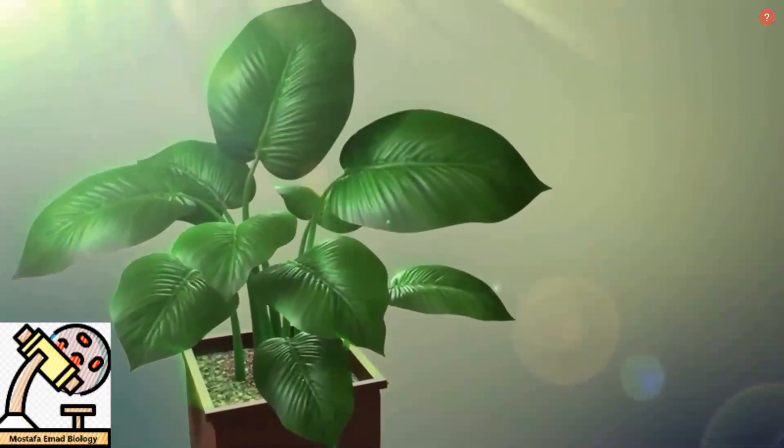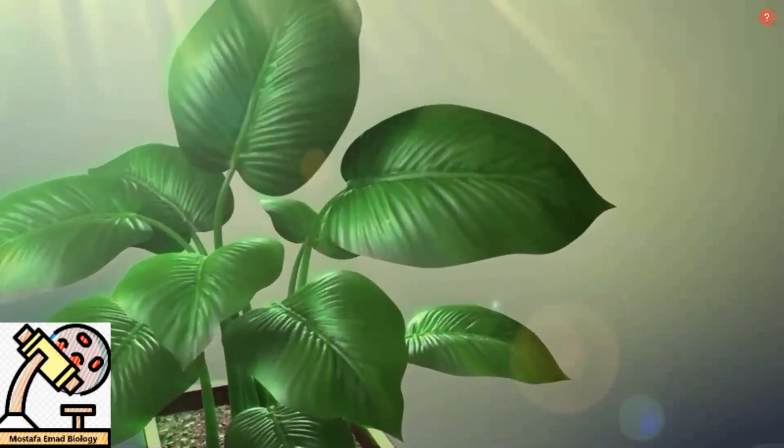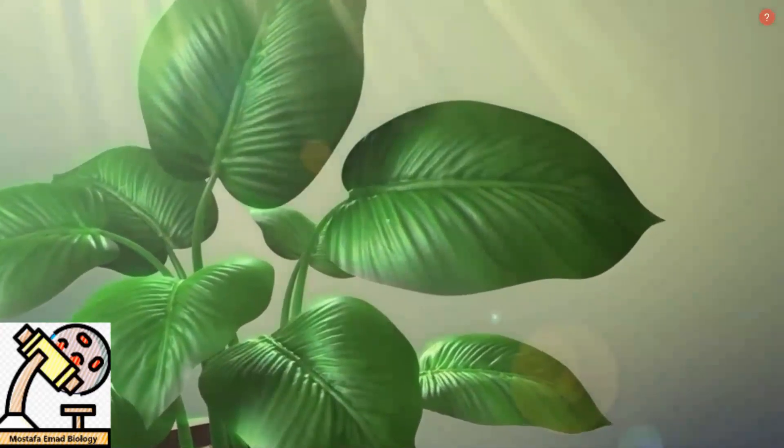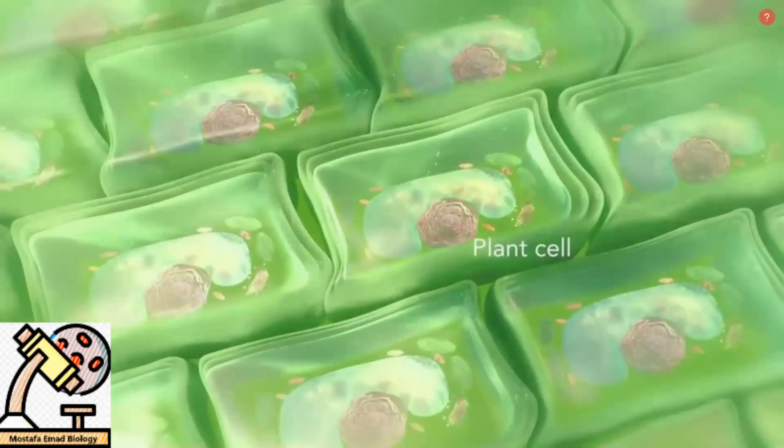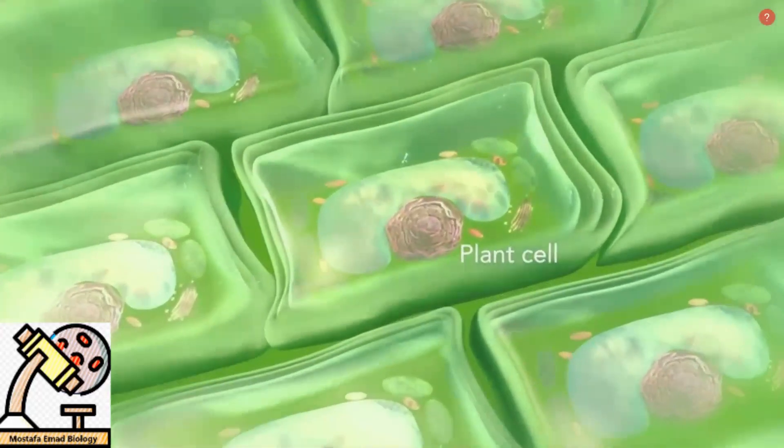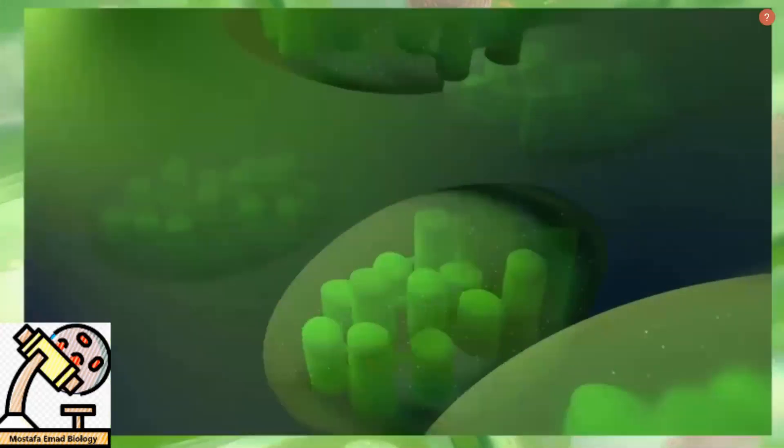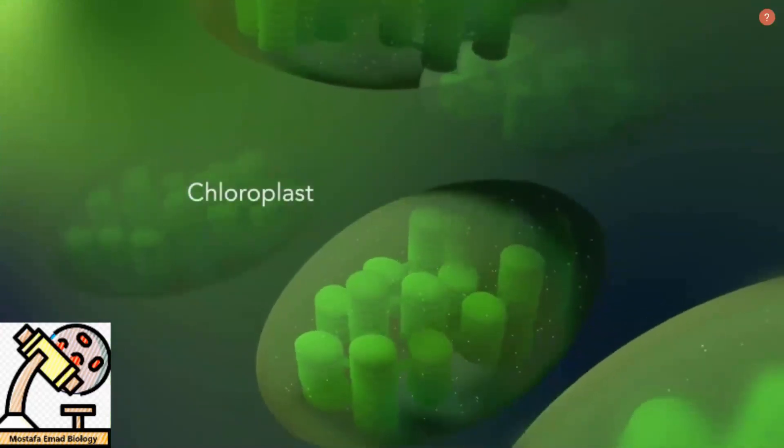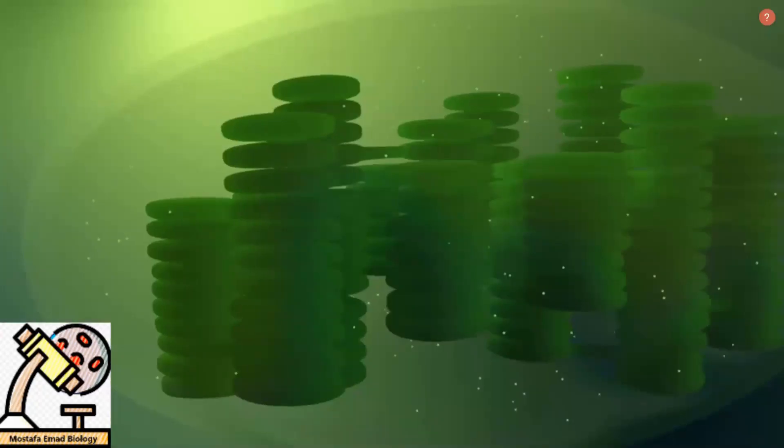Some organisms, such as plants, that are photo-autotrophic, meaning they capture sunlight for energy, have cells with an organelle called chloroplast. The chloroplast is where photosynthesis happens. It's green because it has a green pigment called chlorophyll.